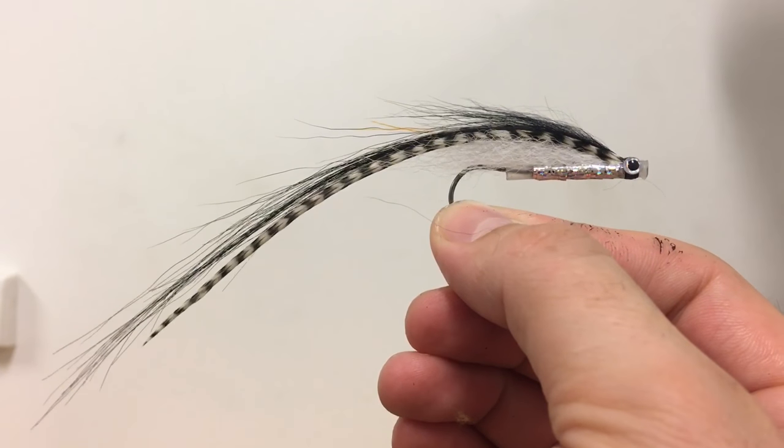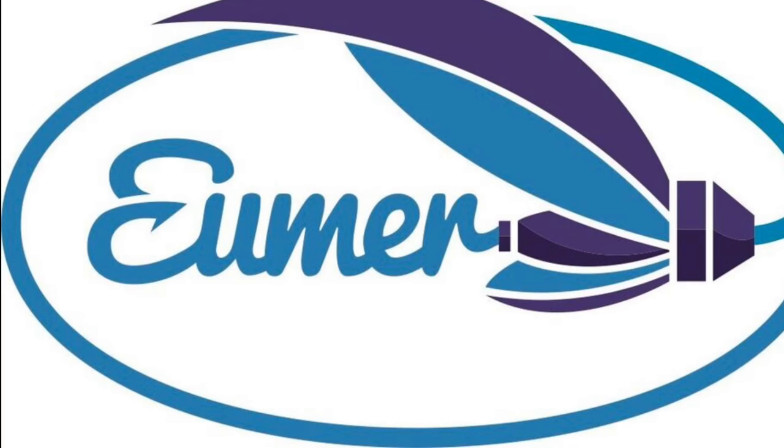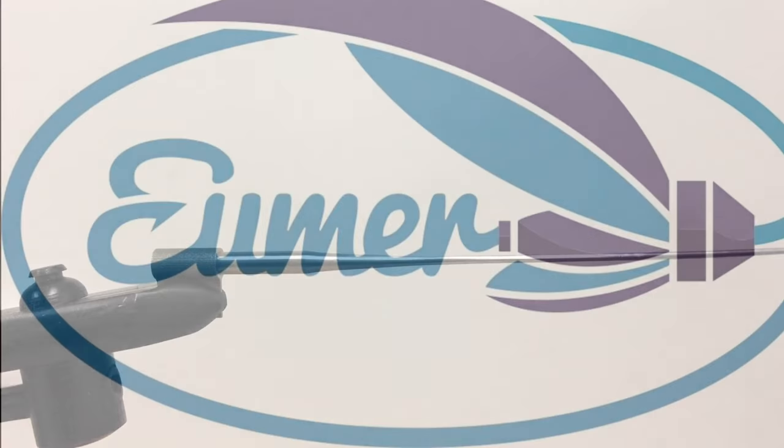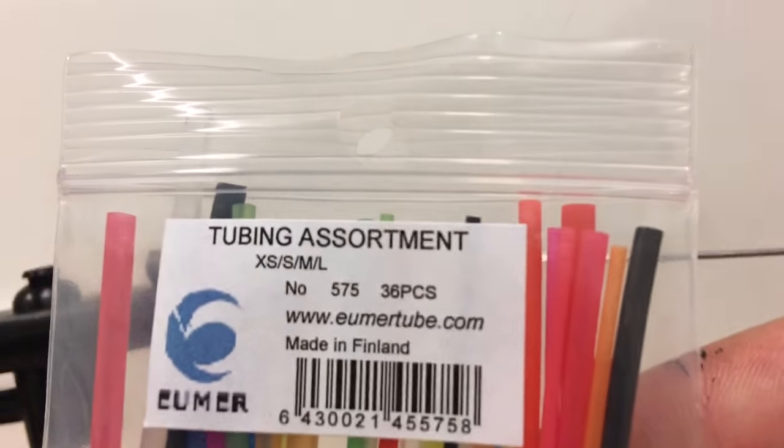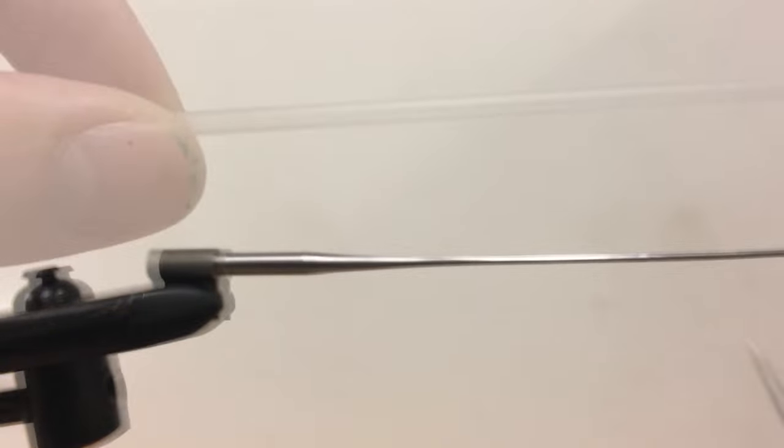Today we're going to tie a tube fly for salmon, steelhead, striper bass, trout, and birds. We're going to make the fly on large plastic tubing.